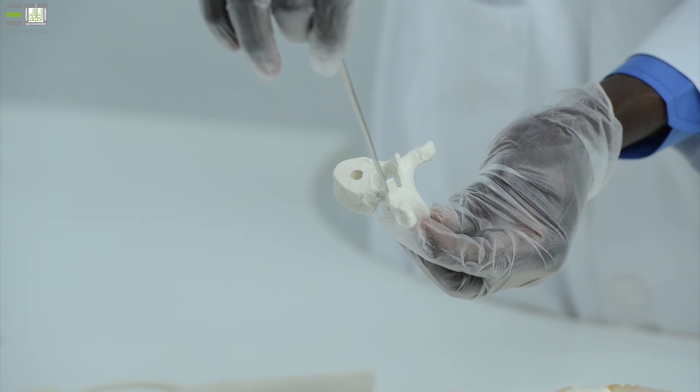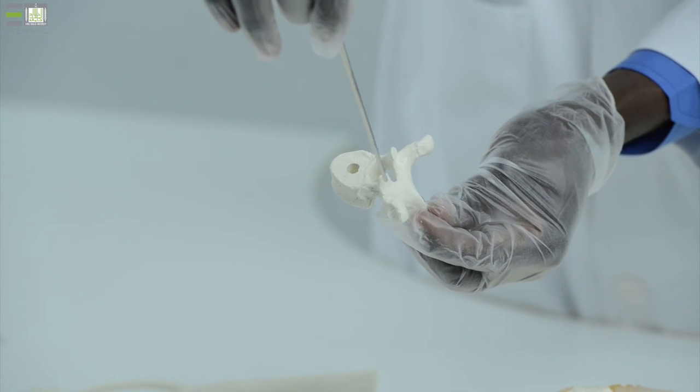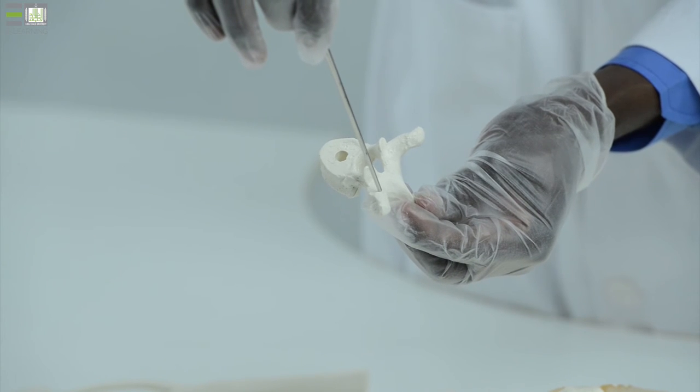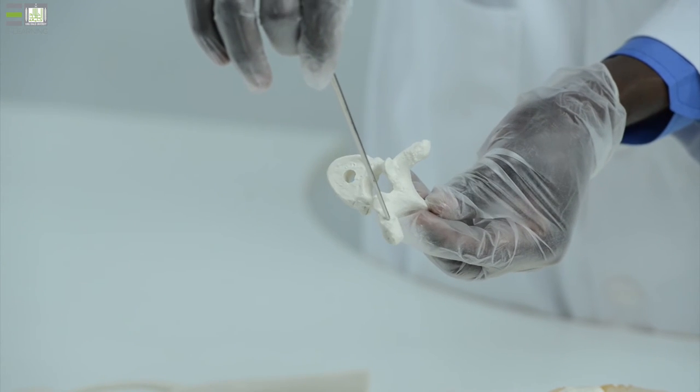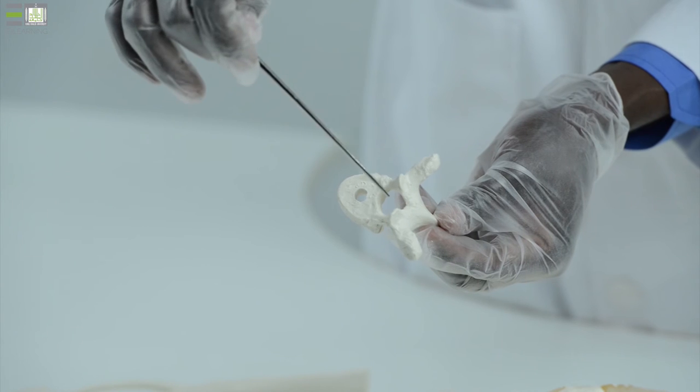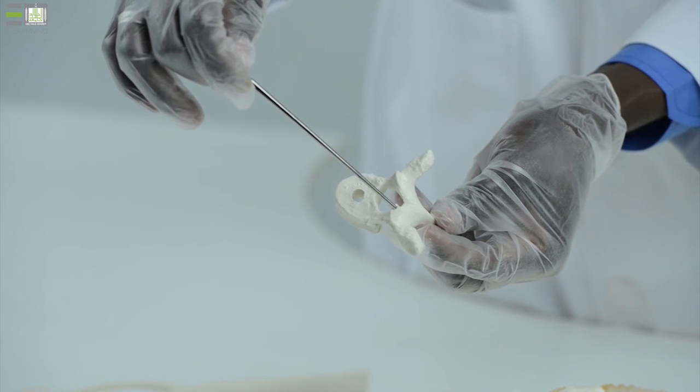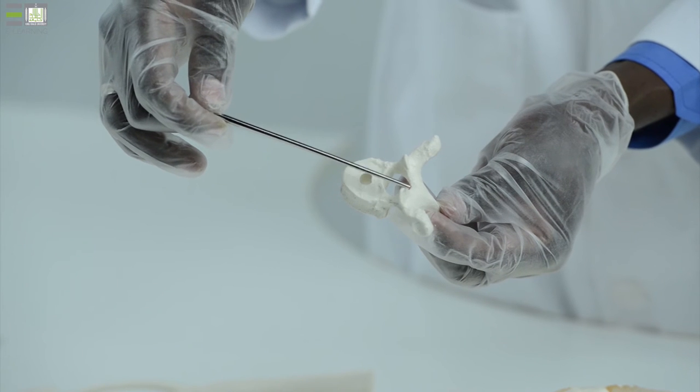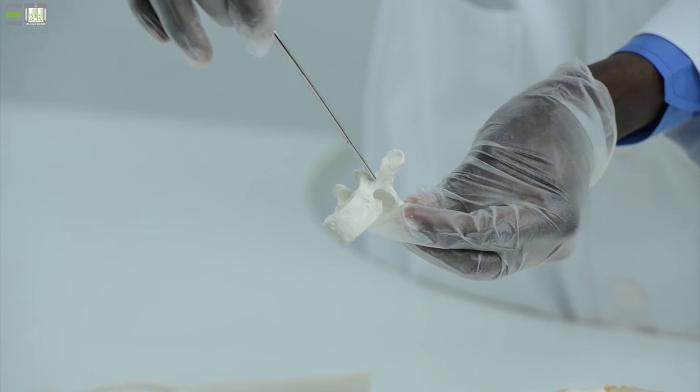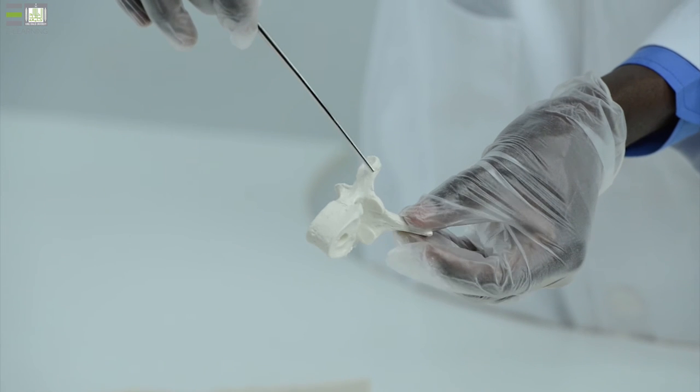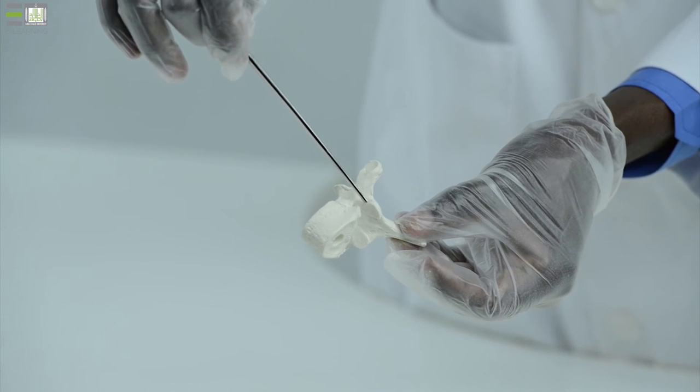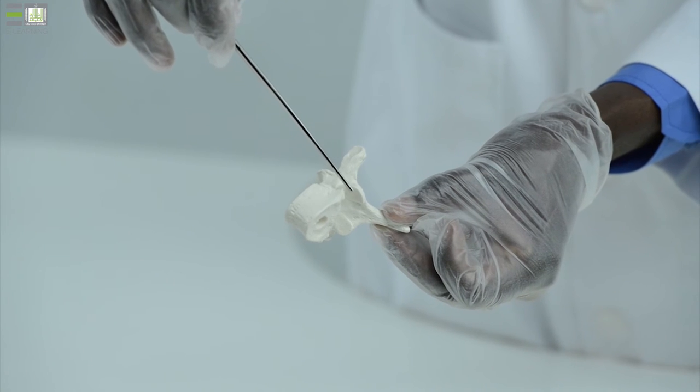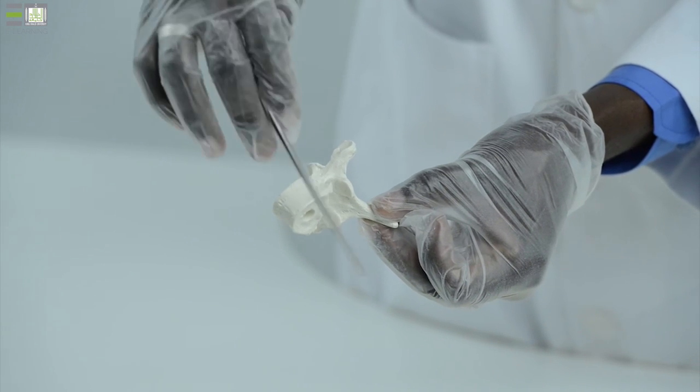The site of meeting of the pedicle and laminae, on each side, there is a projection laterally called transverse process. At the same site, we have superior process called superior articular facet to articulate with the vertebrae above. And there is another process posteriorly called inferior articular process to articulate with the vertebrae below.